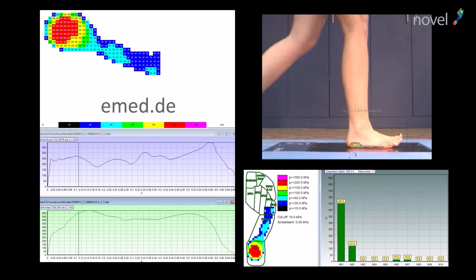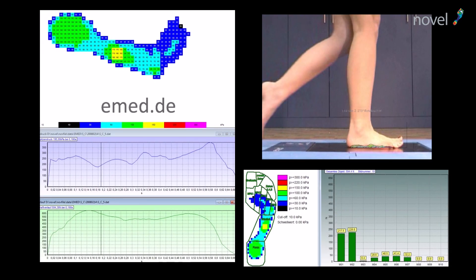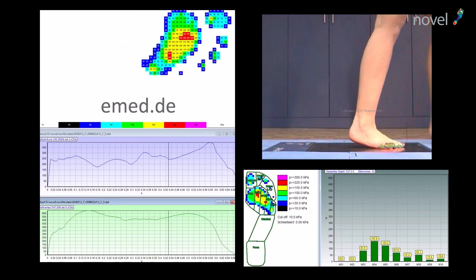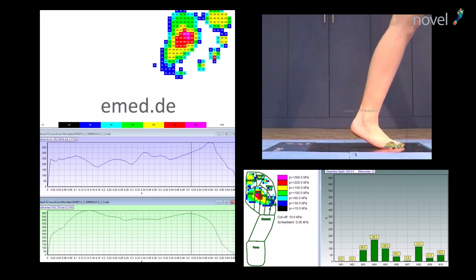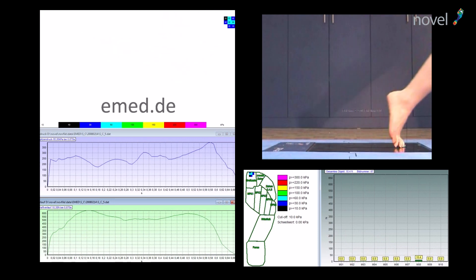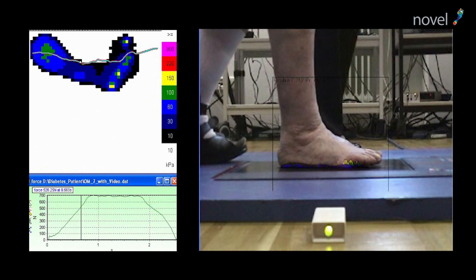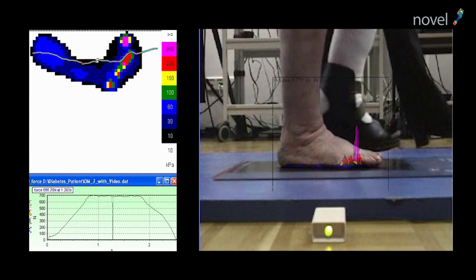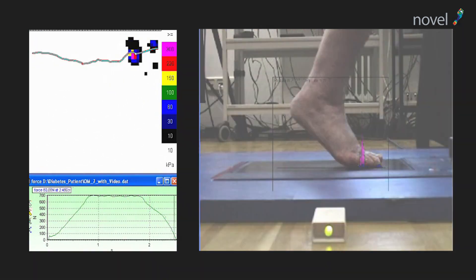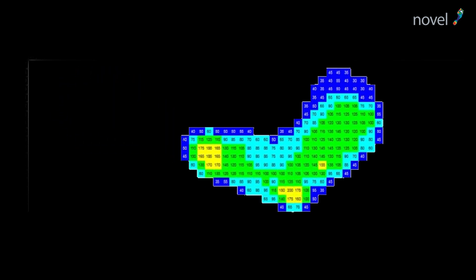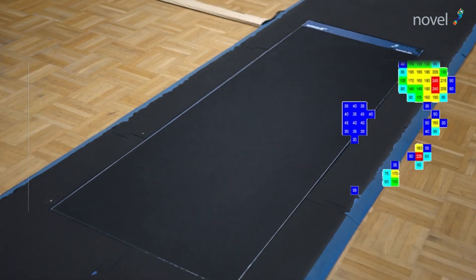AMET enables foot function analysis at the highest quality level. It easily scans the pressure distribution and gives a reliable and accurate analysis of foot function in static and dynamic conditions. You can perform measurements with just one click and generate complete assessment reports within seconds.